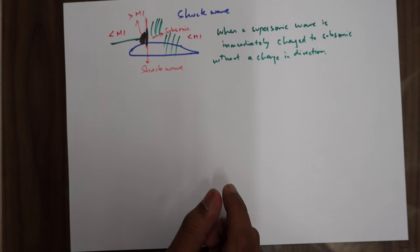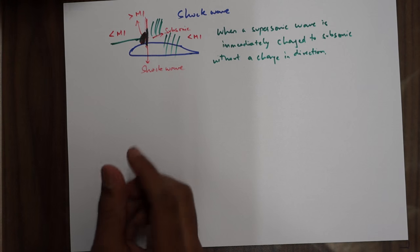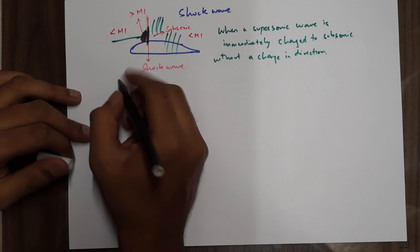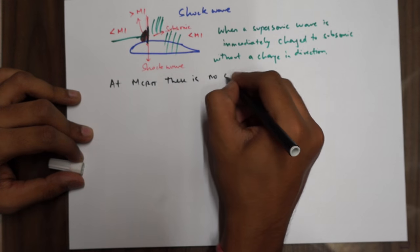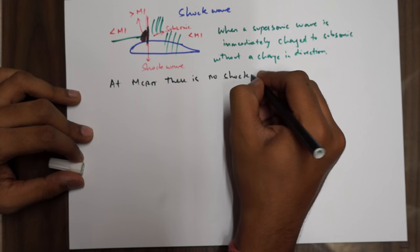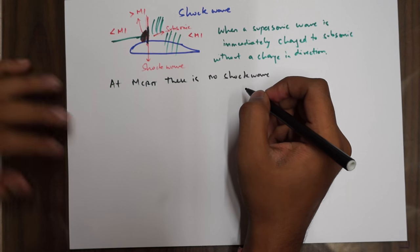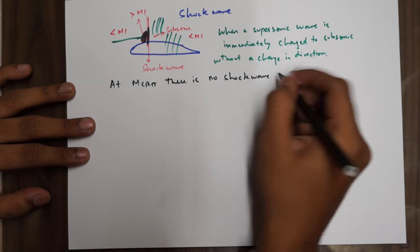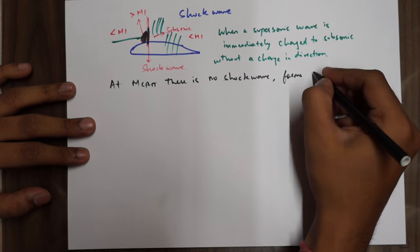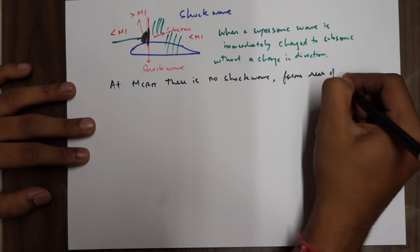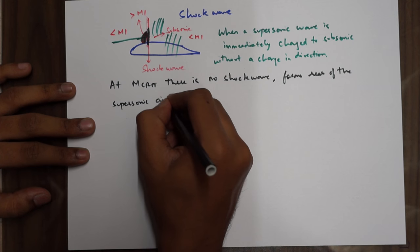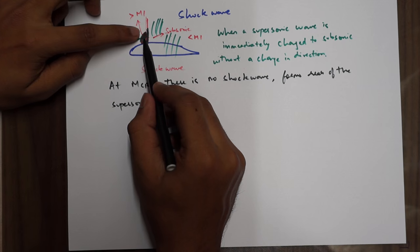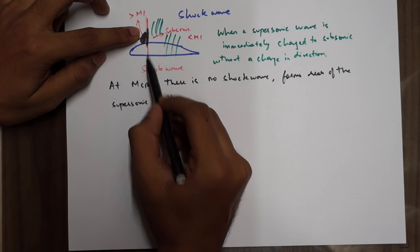One important point: at Mcrit there is no shock wave. It is only after the aircraft crosses Mcrit that the shock wave forms, at the rear of the supersonic airflow.